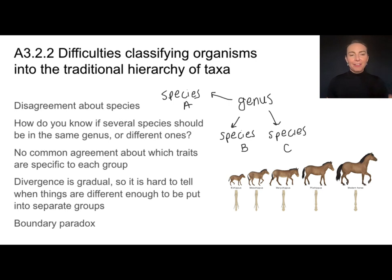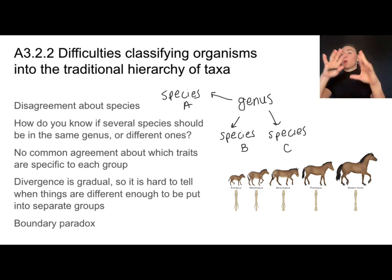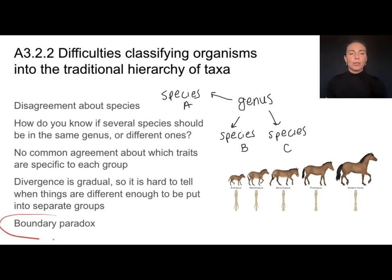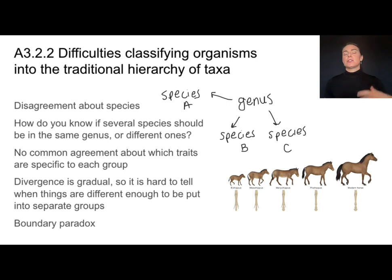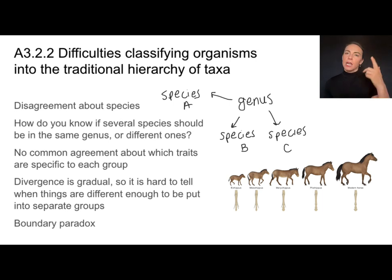The other difficult piece is that divergence is very gradual. It's hard to tell exactly when two things should be put into separate groups — whether that's separate species, a separate genus, or a separate phylum. This is called the boundary paradox: it's very hard to tell where that boundary is. Are we artificially creating boundaries, or should we be leaving things more open? You're not expected to have these answers, but you are expected to understand why we're questioning this method of classification.